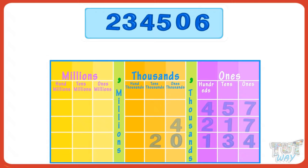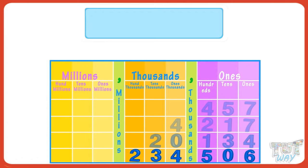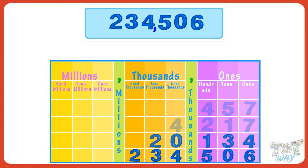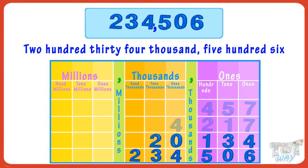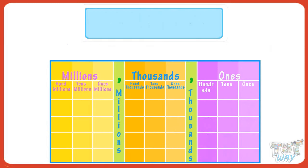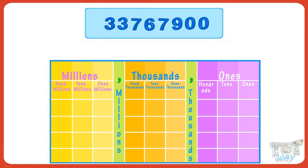Now let's read a six-digit number. Write it below the place value chart starting with the ones place. Two, three, four are in the thousands period, so read it as two hundred thirty-four thousands and place a comma. The next three numbers are in the ones period — read them as five hundred and six. We write this number as 234,506 and read it as two hundred thirty-four thousand five hundred and six.